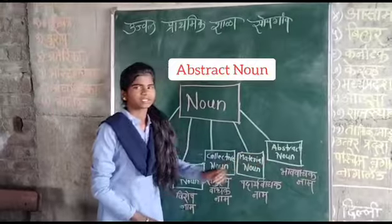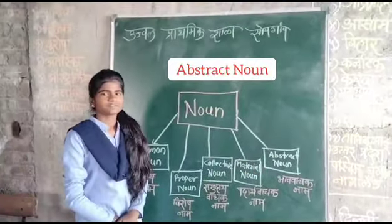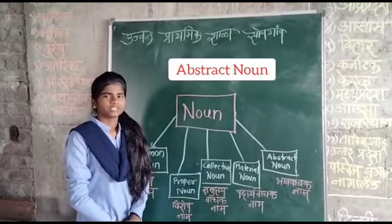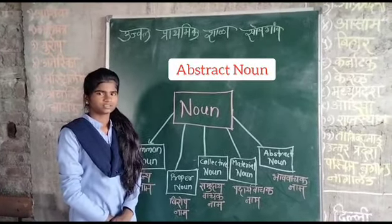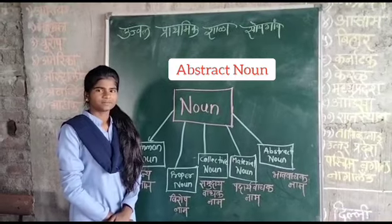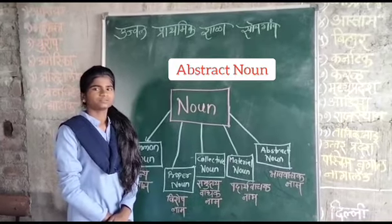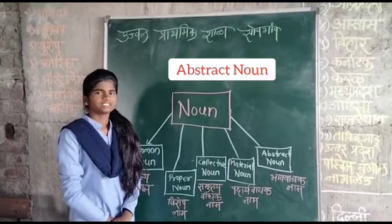Fifth is abstract noun. An abstract noun expresses feeling, emotion, expression. For example, anger, truth, happiness, pain.